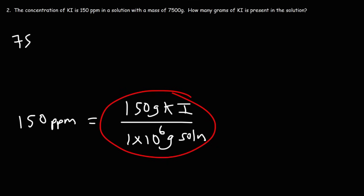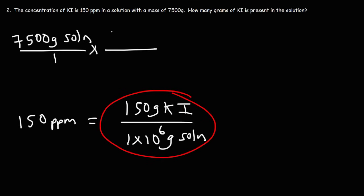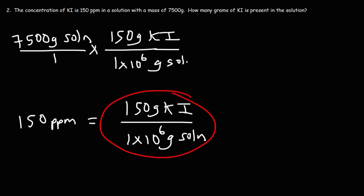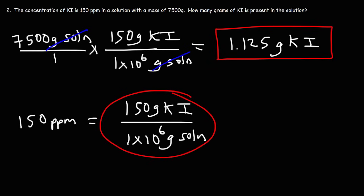Let's start with the mass we're given: 7,500 grams of solution. Now let's convert this to grams of KI. Using this concentration, we know there are 150 grams of potassium iodide for every 1,000,000 grams of solution. The units of grams of solution cancel, so it's going to be 7,500 times 150, divided by 1 times 10 to the 6. The answer is 1.125 grams of potassium iodide.